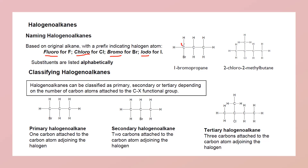When naming halogenoalkanes, first we select the longest carbon chain, and numbering should start from the nearest branch or functional group. For example, counting from the left gives position one for the branch, counting from the right gives position three — we always follow the numbering where the branch or functional group is closer. So if bromine is at position one and there are three carbon atoms, it is 1-bromopropane.